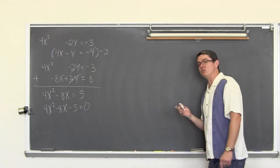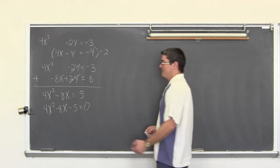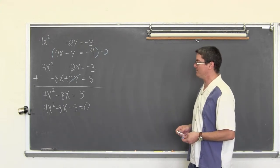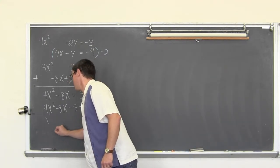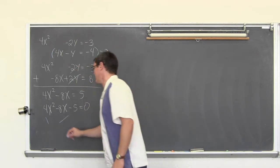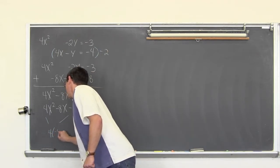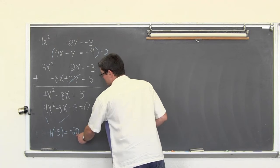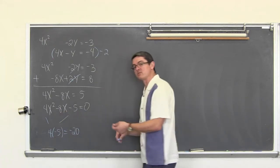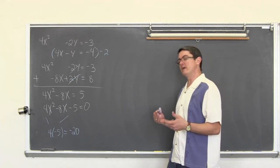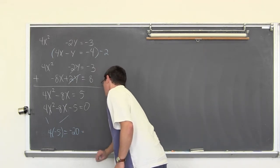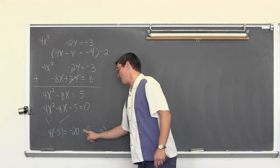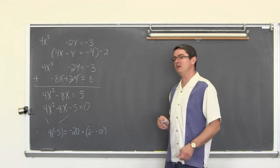Now if you did not watch the other video about substitution, this is slightly difficult to factor because the leading coefficient is not equal to one. So I am going to take the leading coefficient and the constant and multiply them together: four times negative five equals negative twenty. We are looking for factors of negative twenty that also add to negative eight. Those factors are positive two and negative ten — they multiply to negative twenty and also add to negative eight.